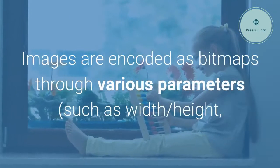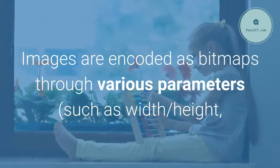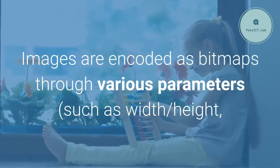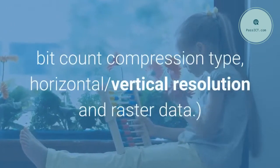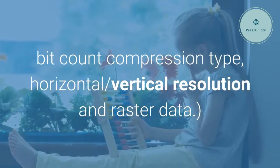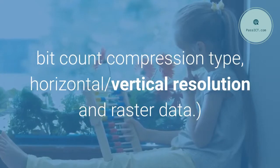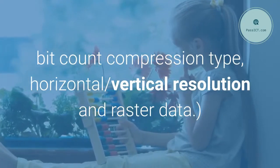Images are encoded as bitmaps through various parameters such as width, height, bit count, compression type, horizontal and vertical resolution, and raster data.